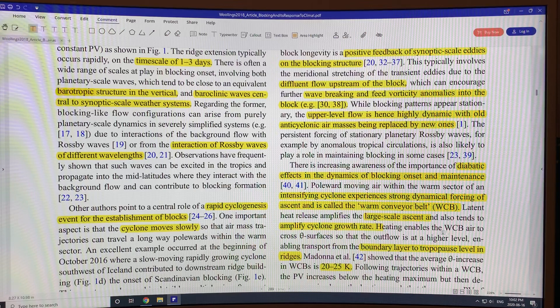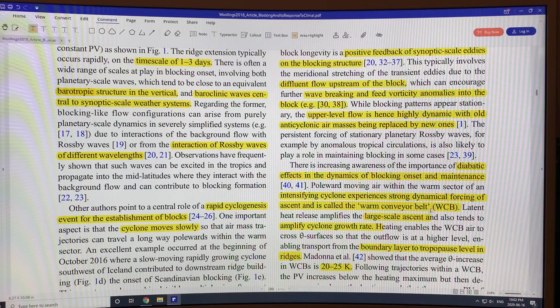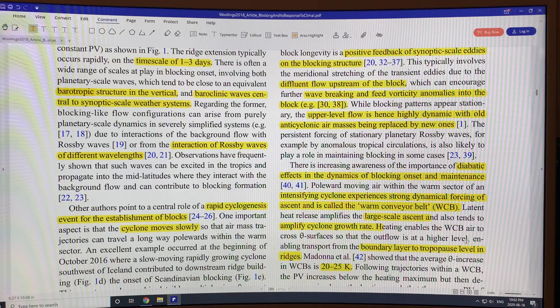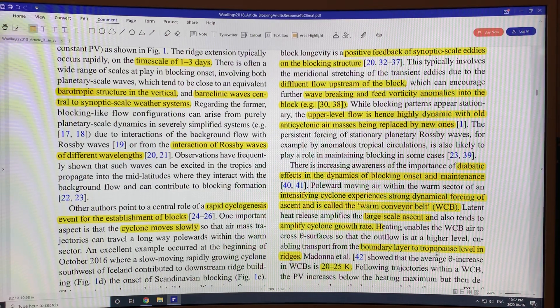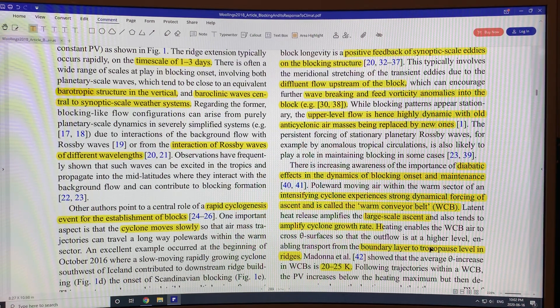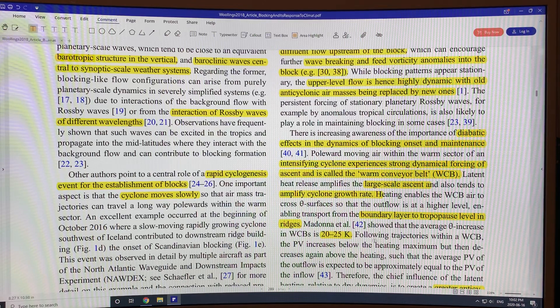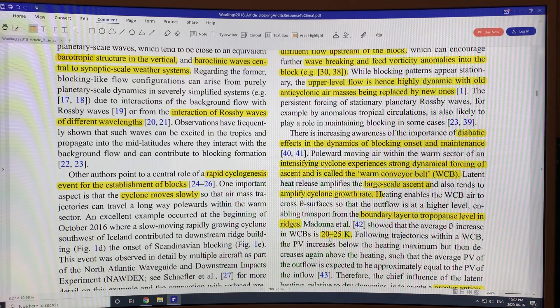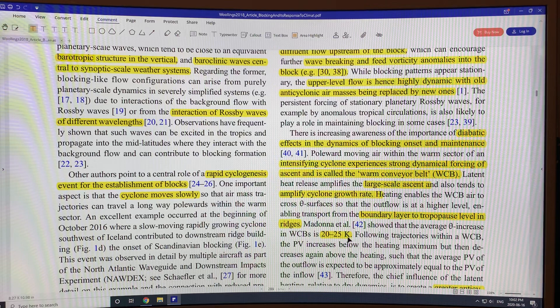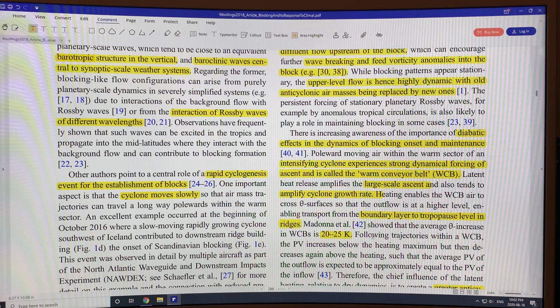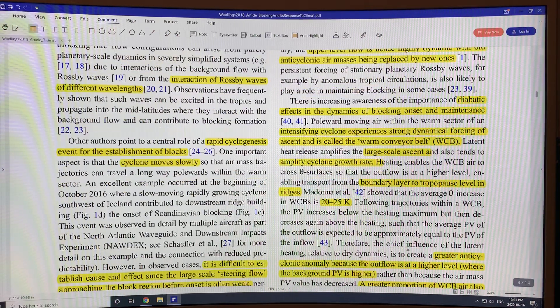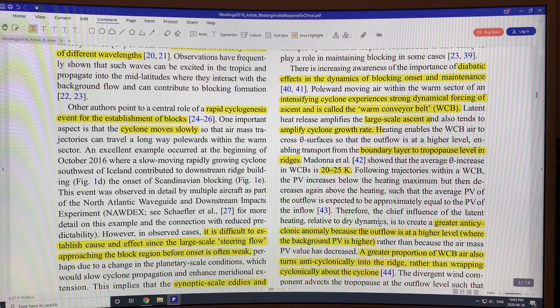This heating enables the WCB, the warm conveyor belt air, to cross temperature surfaces and outflow at a higher level. So basically it brings energy from the boundary layer to the tropopause level of the jet streams in these ridges. And the temperature can rise typically 20 to 25 degrees Kelvin or 20 to 25 degrees Celsius. So this adds energy and can help maintain the block.